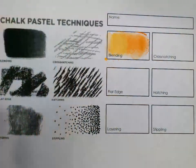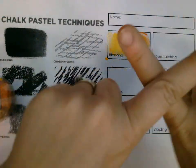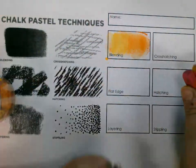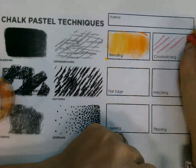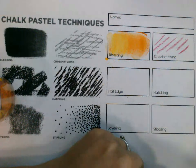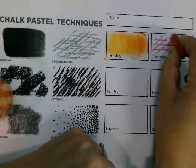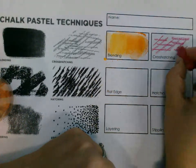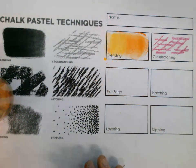Second technique, cross-hatching. So this means that we're going to go in a T-shape or an X-shape pattern to make texture. So I just made some diagonal lines that way. And different sizes, different shapes. Horizontal lines this way. That's cross-hatching.